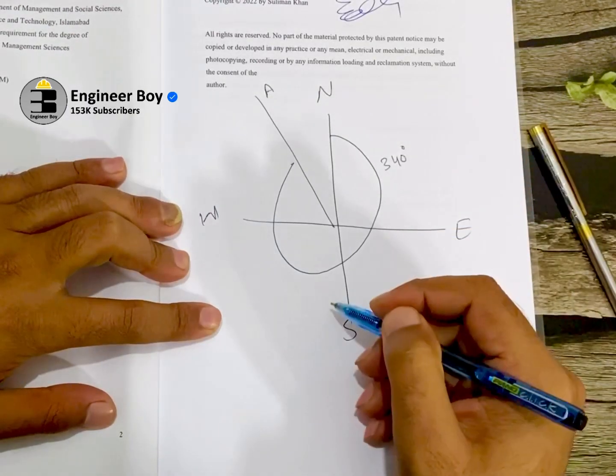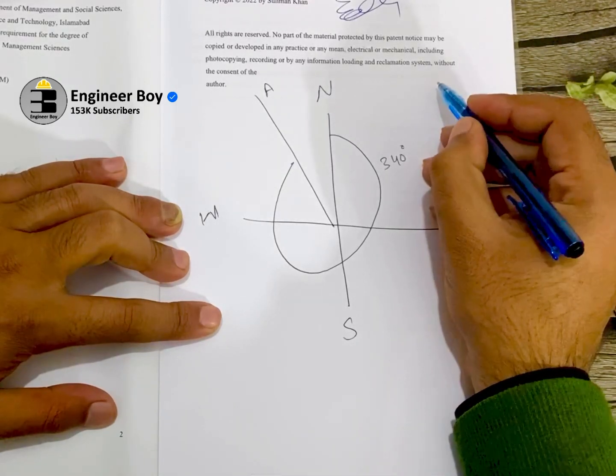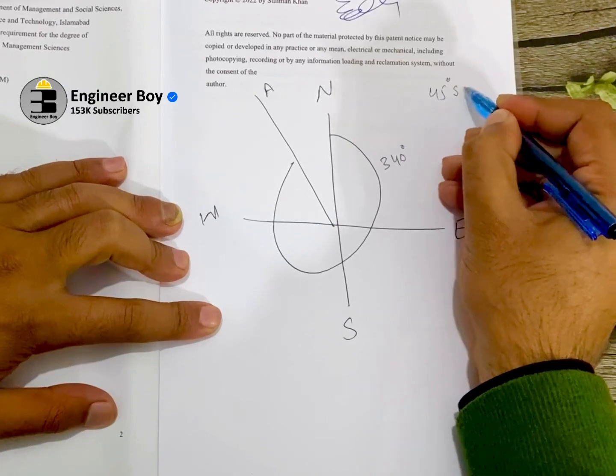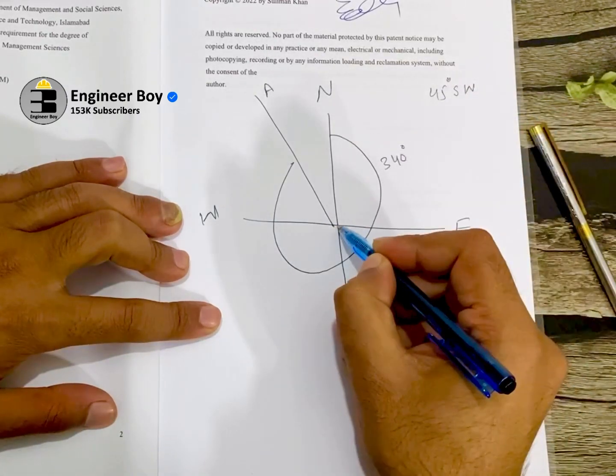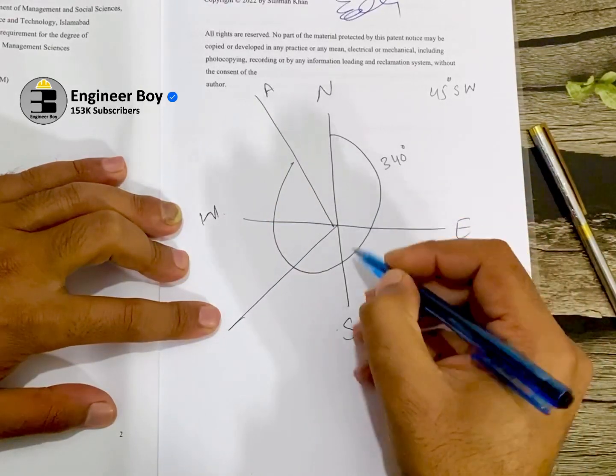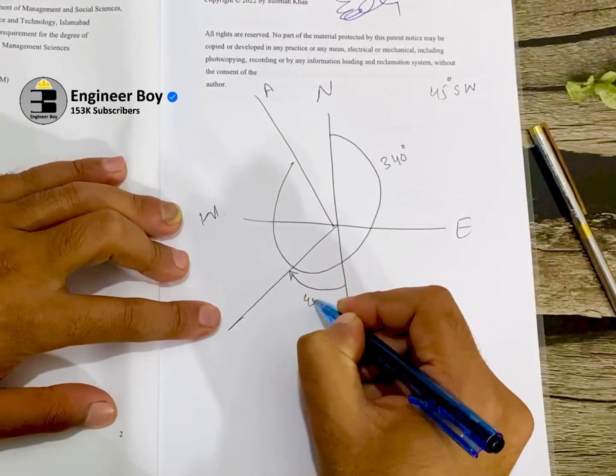Now, another line, which is line B, and that is making just the bearing, which is 45 degrees, but that's southwest. That means that we're here in this quadrant. Southwest, and that is just from here to there, 45 degrees.